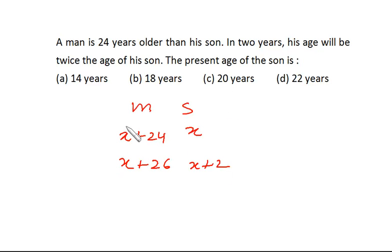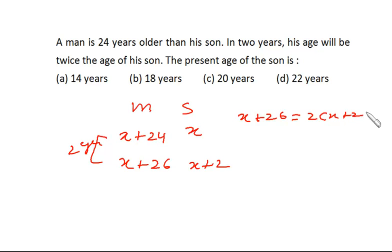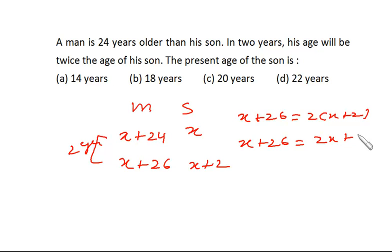According to the question, after two years the age of the man will be twice that of his son. That means x plus 26 is equal to twice of x plus 2, which gives us x plus 26 is equal to 2x plus 4.